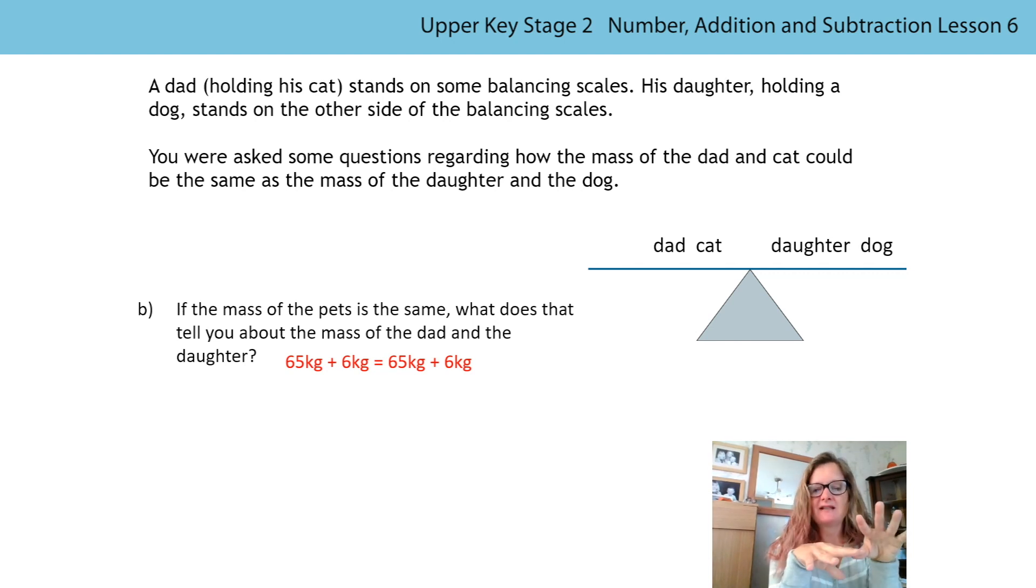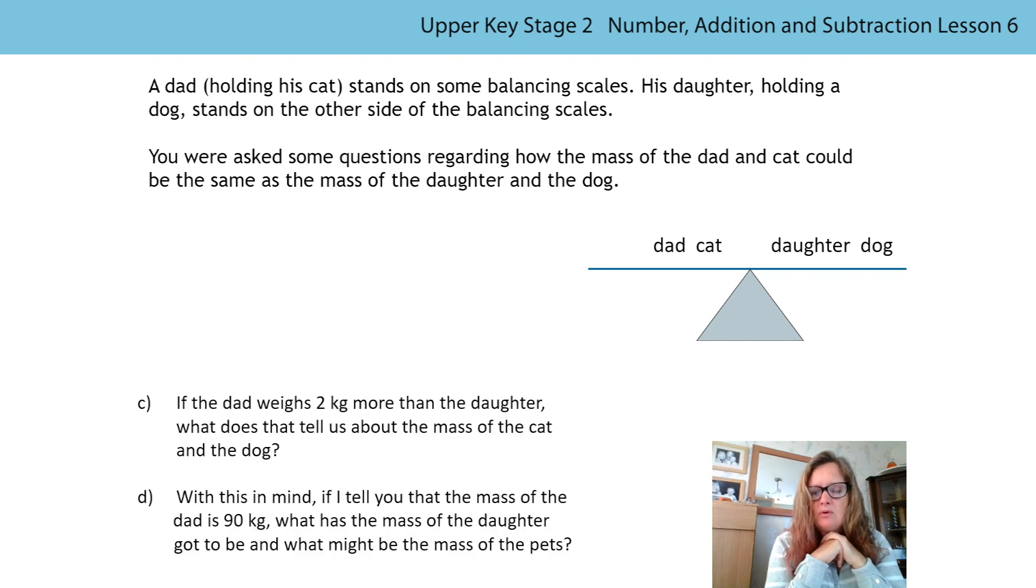So if the mass of the pets is the same, then the dad and the daughter must be the same as well. That's right, the daughter could be a grown-up daughter and they could weigh the same mass. What if the dad weighs two kilograms more than the daughter? What does that mean about the mass of the pets? To keep the balance level, if the dad is two kilograms more than the daughter, the dog would have to be two kilograms less than the cat so that the scale remains balanced.